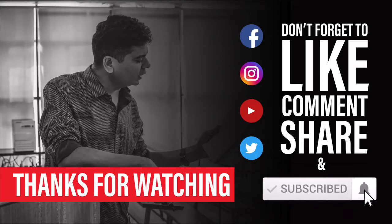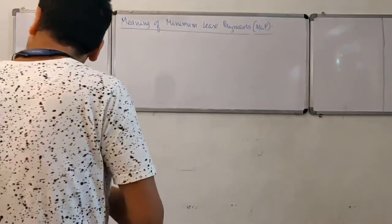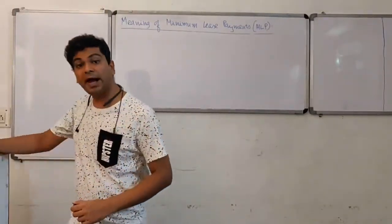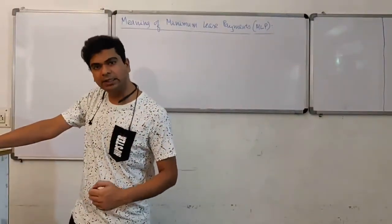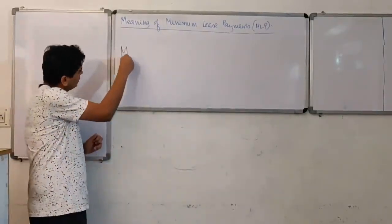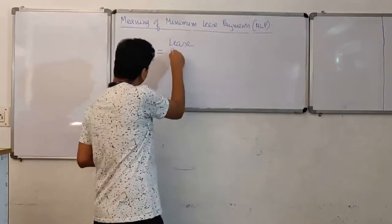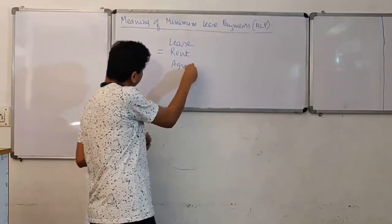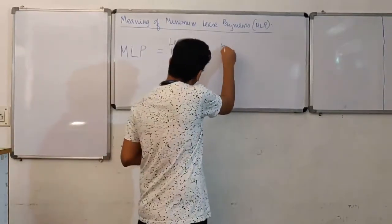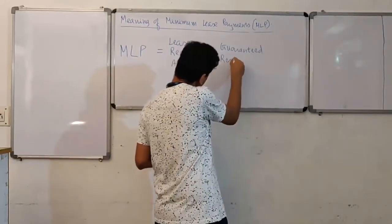In this episode, we shall discuss the meaning of minimum lease payments, MLP in short, under Accounting Standard 19 Leases. AS-19 suggests that minimum lease payments is the sum total of lease rent agreed and guaranteed residual value.